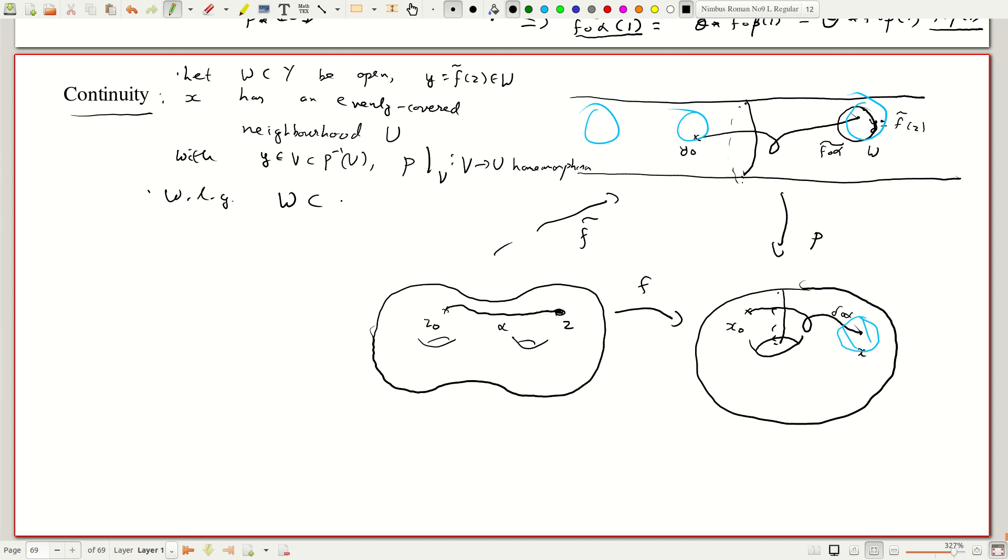W is contained in the evenly covered neighborhood v, I mean the image of the evenly covered neighborhood v. So that means I will change my picture a little bit.